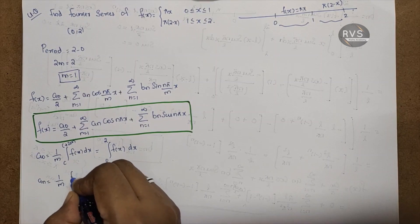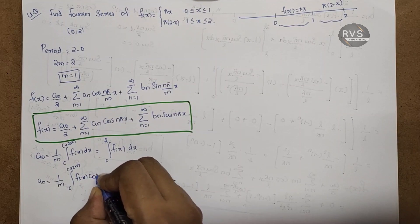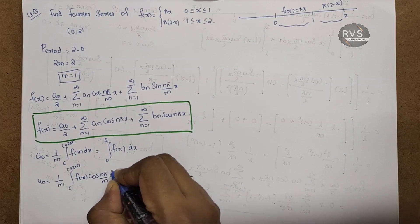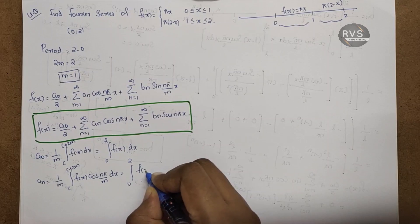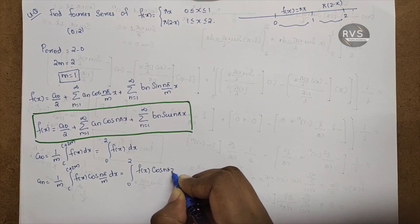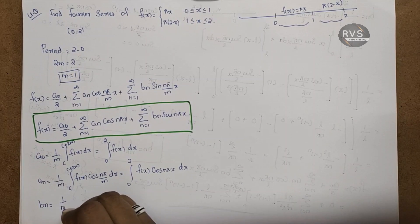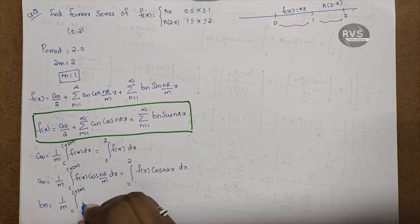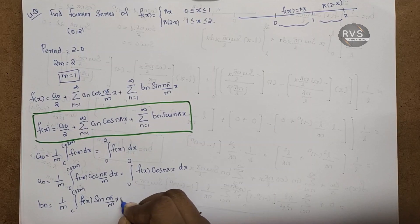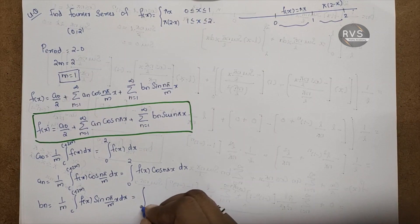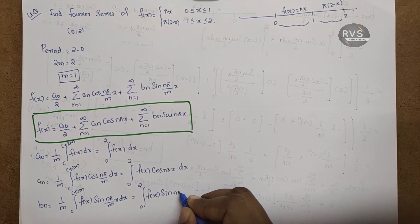For a_n: 1 by m into integral 0 to 2 of f(x) into cos(nπx) dx. For b_n: 1 by m into integral from c to c plus 2m of f(x) into sin(nπ by m · x) dx, which becomes 1 by m into integral 0 to 2 of f(x) into sin(nπx) dx.